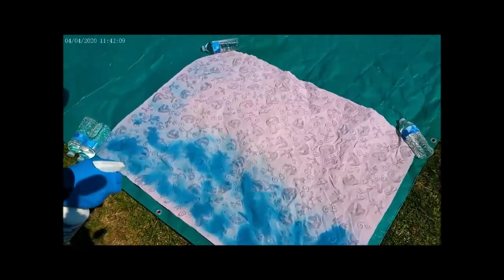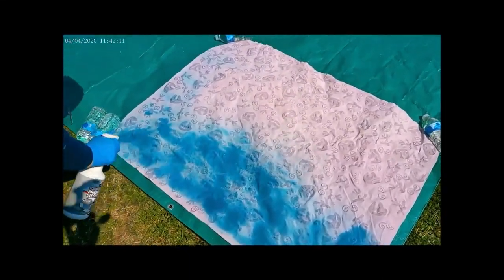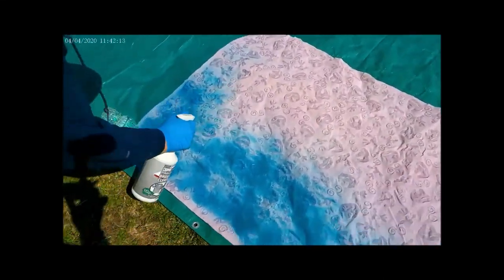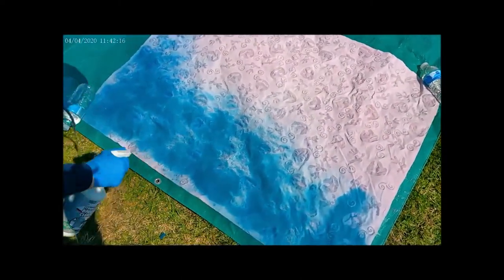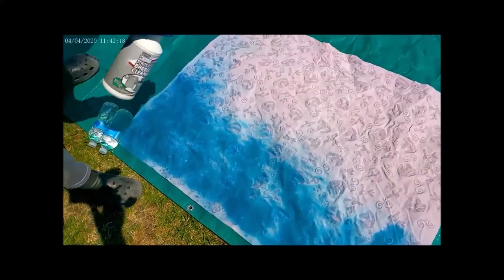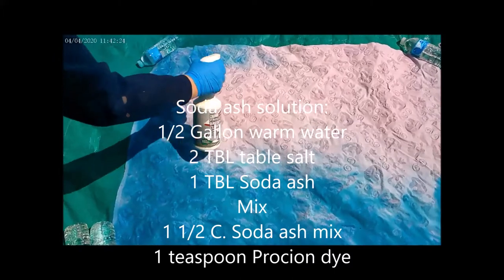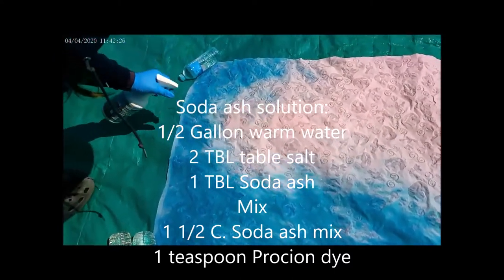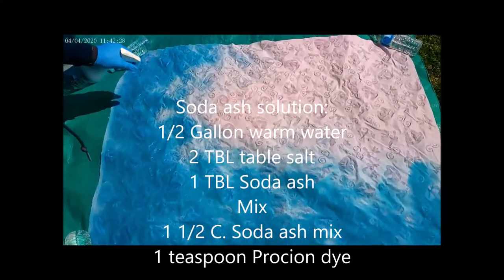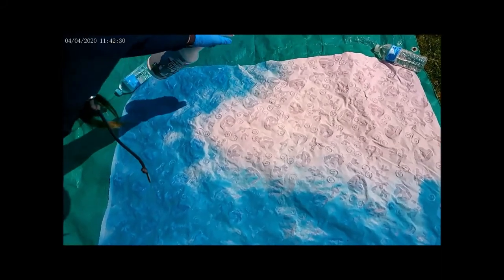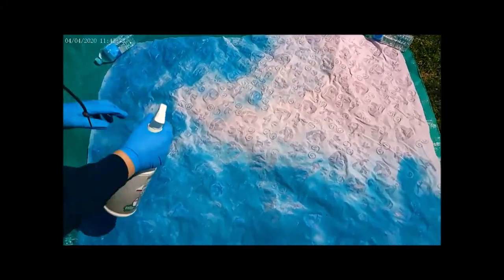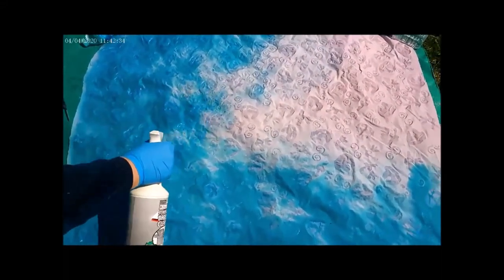So my Procion dye mixture is one teaspoon of Procion dye to one and a half cups of soda ash water. My soda ash water, I use a half a gallon of warm water and dissolve two tablespoons of salt and one tablespoon of soda ash.